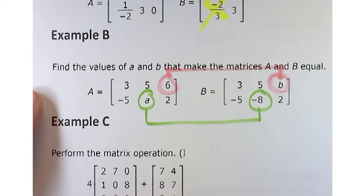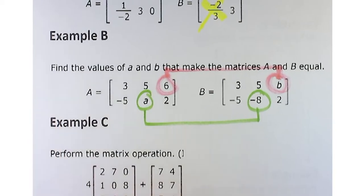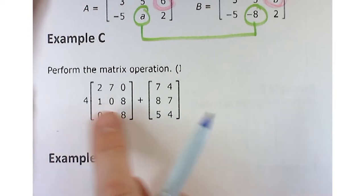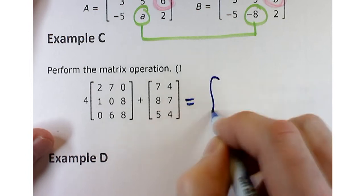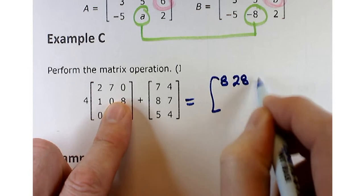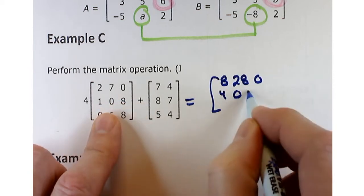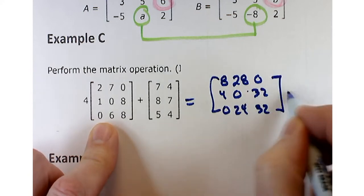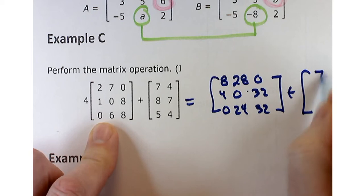If you do have matrices that are the same dimension, then you can add them, you can subtract them. For right now, we've got this one which has us do 4 times this matrix. That's going to be 8, 28, 0, 4, 0, 32, 0, 24, and 32 again. And then we want to add 7, 4, 8, 7, 5, 4.